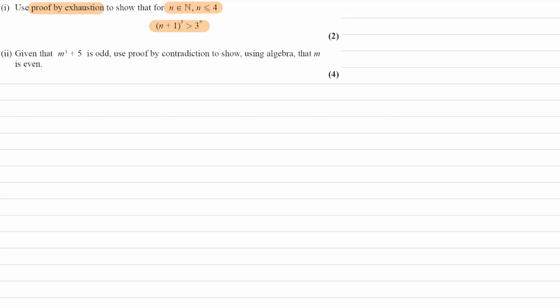So proof by exhaustion means considering every possibility. We want to consider every possibility given the constraints that are told to us in the question, and then prove that this statement or inequality here is true.